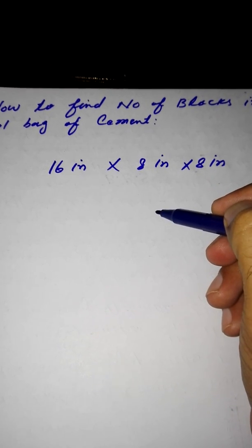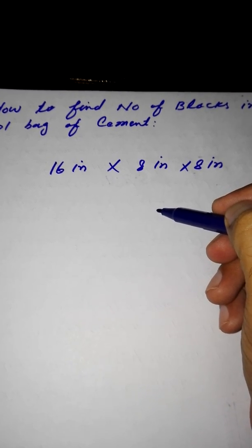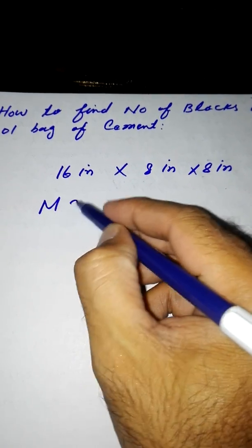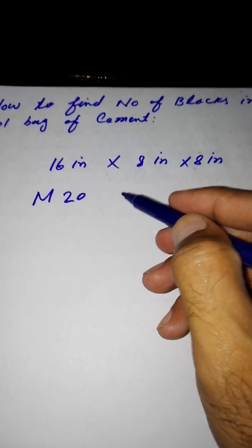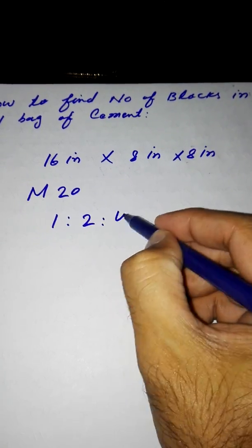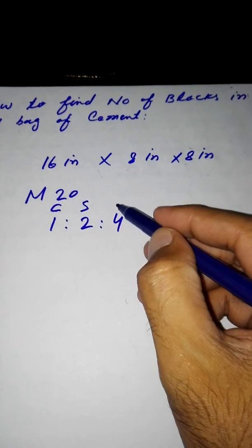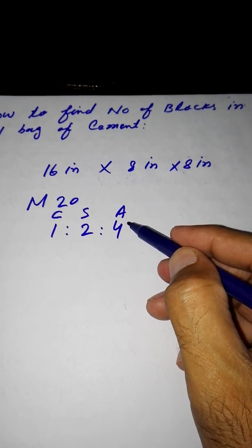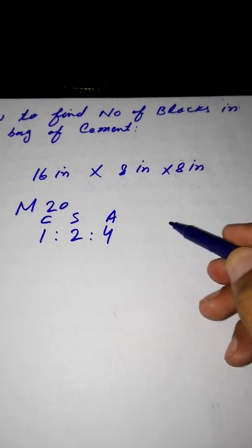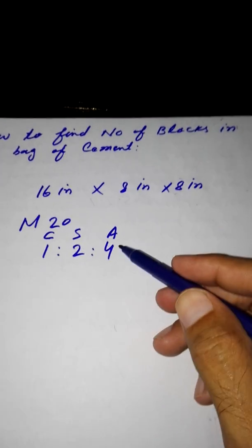First of all, suppose we use M20 grade concrete. M20 grade concrete has a mix ratio of 1:2:4 — where 1 is cement, 2 is sand, and 4 is aggregate. The standard weight of one bag of cement is 50 kg.